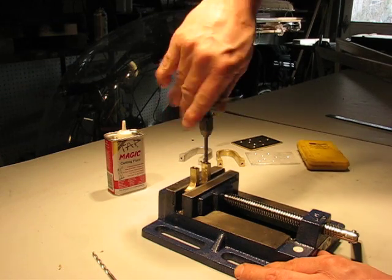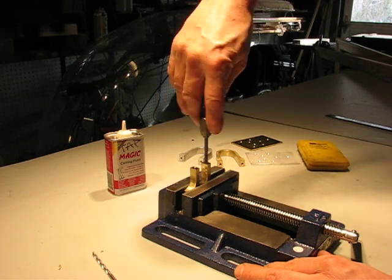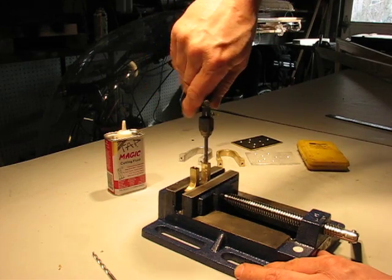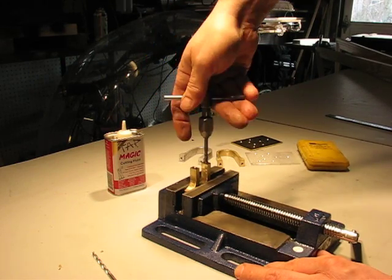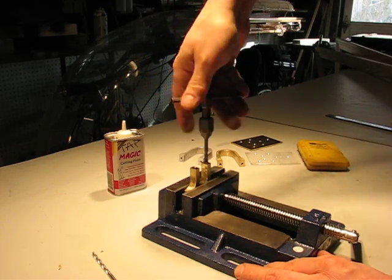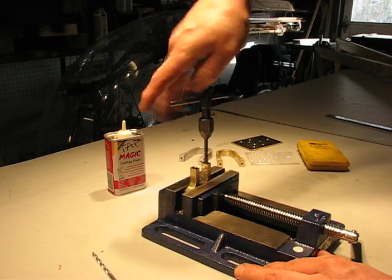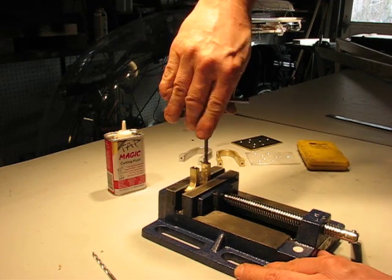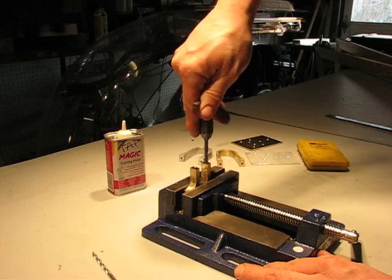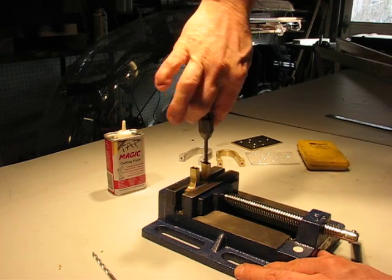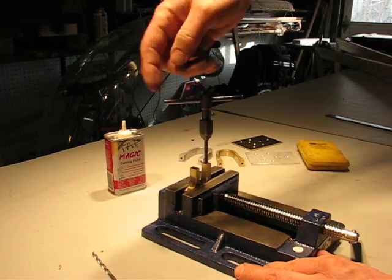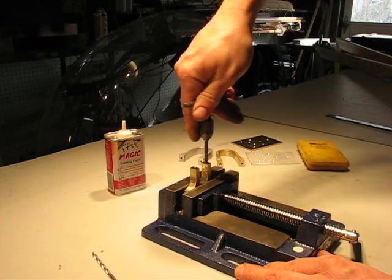Now the reason you're doing that back turn is you're breaking off the little curl of brass that your cutter is peeling up from the sides of your hole. So you cut it, and you get this little curl of brass, which will jam the tap unless you turn it back to use the back side of these little teeth to cut off that little curl.